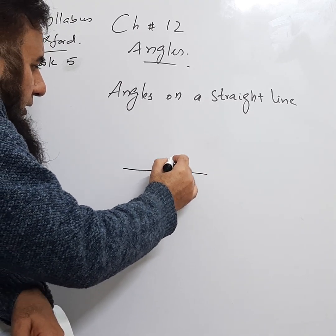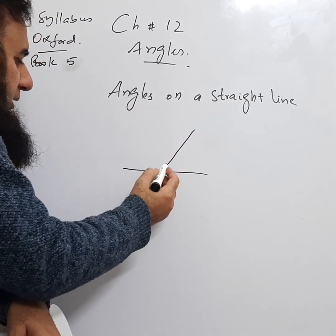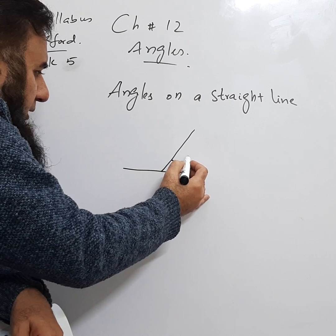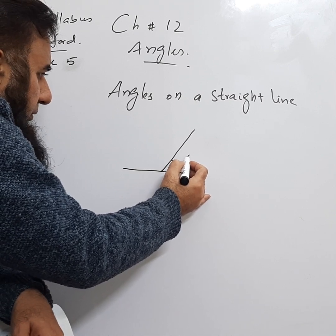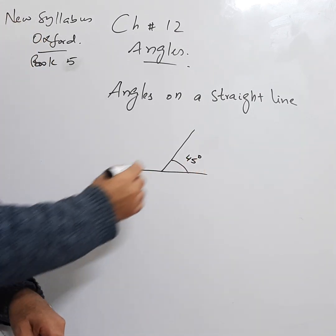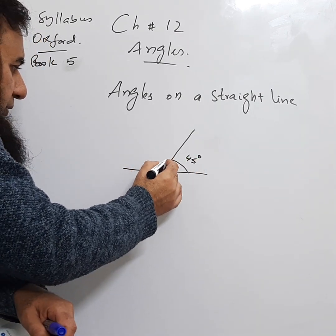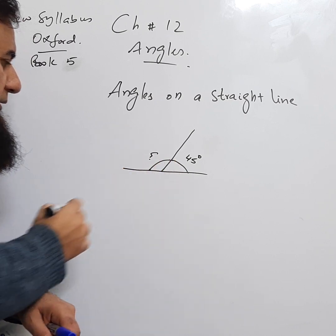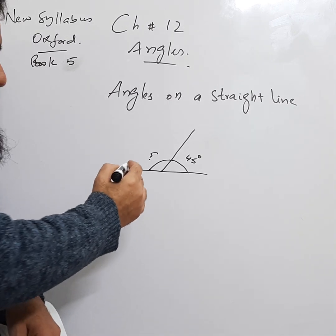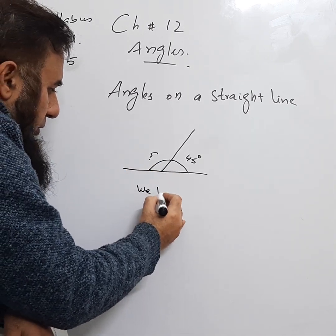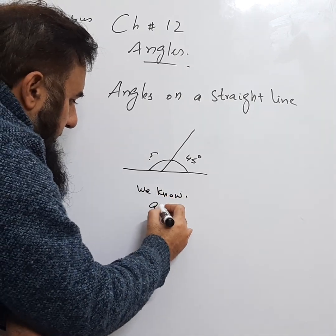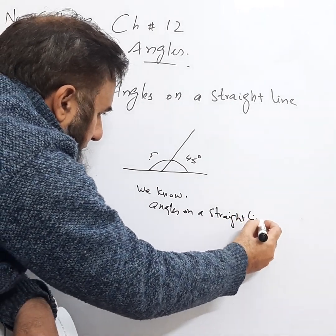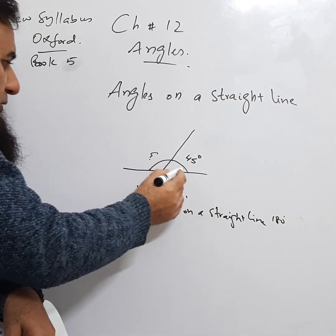If we say that this angle is, let's suppose, 45 degrees, and we need to find this one from here to here, we can easily find it. How? We say that we know very well that angles on a straight line equal 180 degrees.